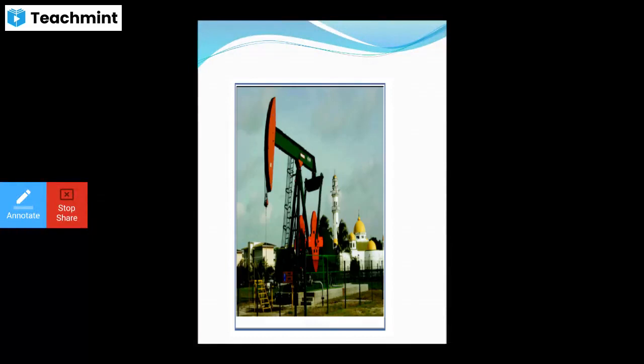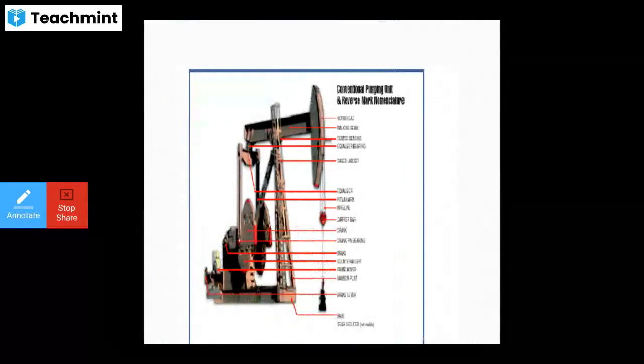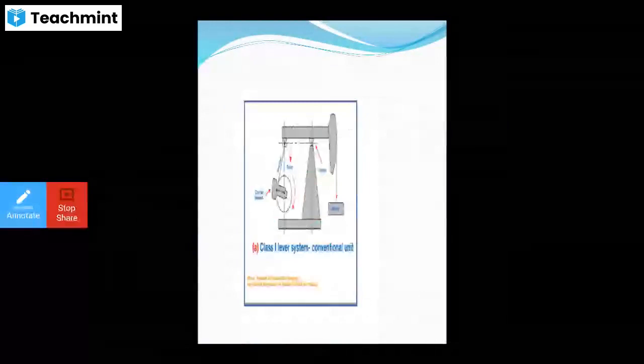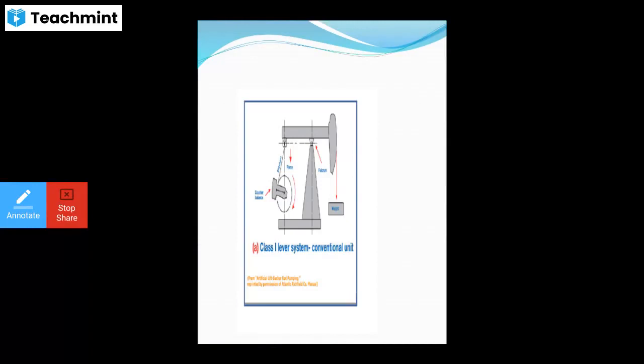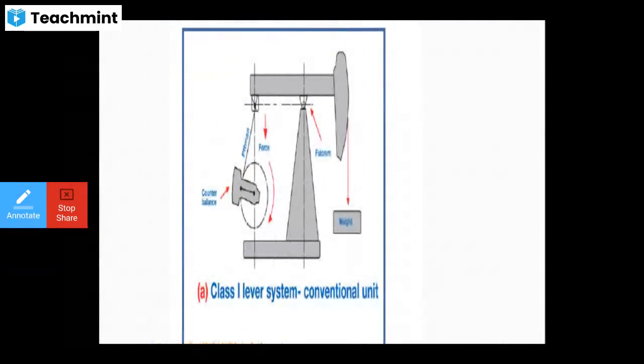This is your typical SRP unit showing the brief nomenclature of your conventional beam pumping units. You will see the carrier, crank, etc. more clearly in the coming slides. This is your class one lever system — the conventional unit — where you can see the counterbalance, force, polished rod, and weight.